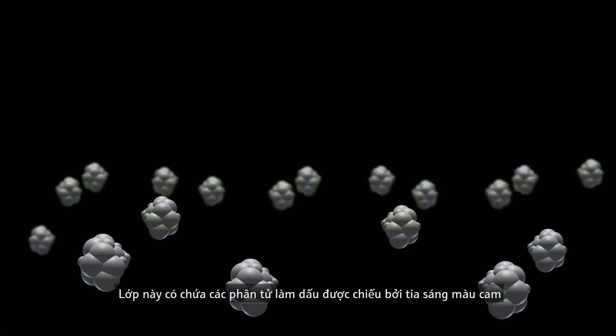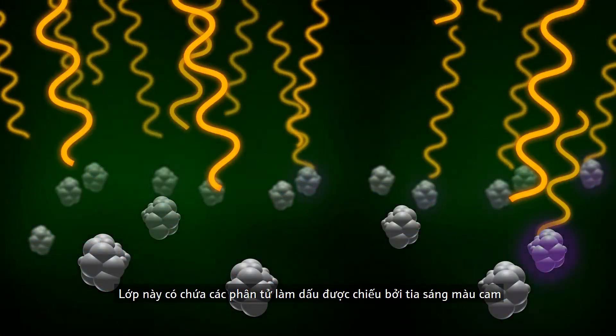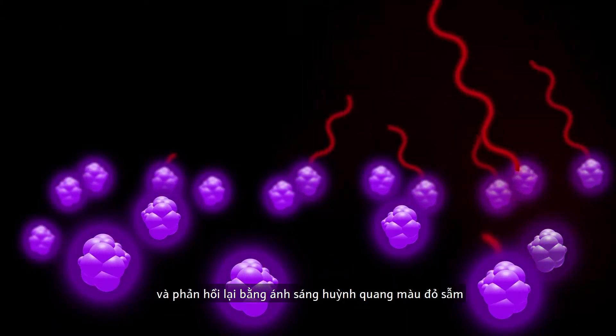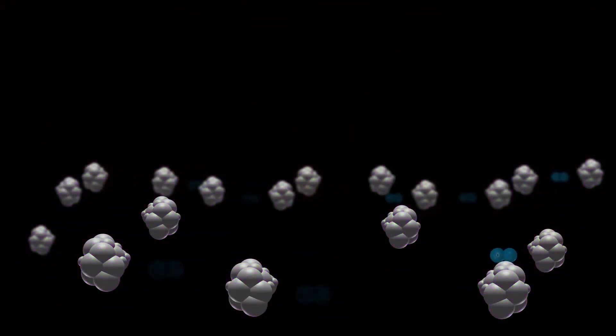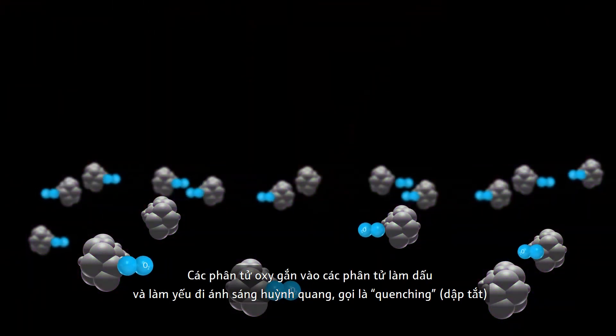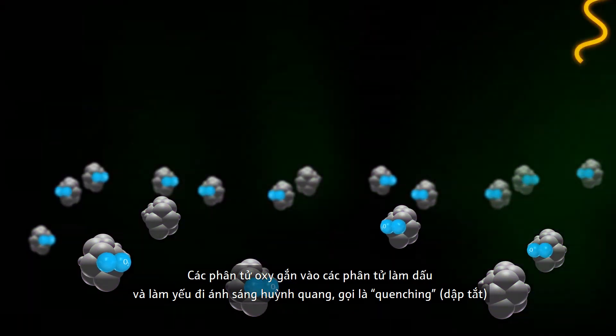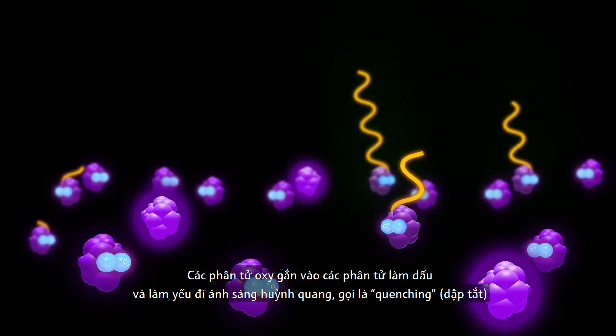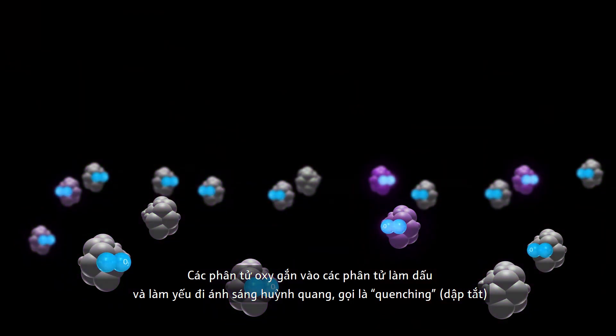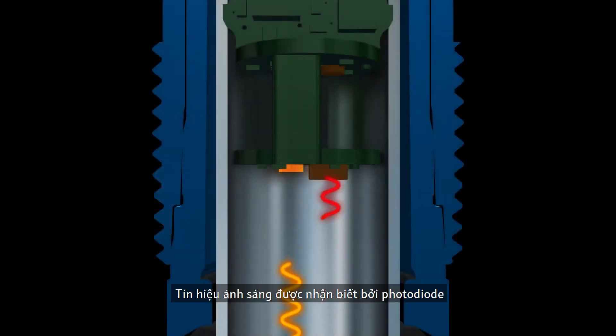The layer contains marker molecules that are excited by an orange light and respond with a dark red fluorescence light. Oxygen molecules attach to the marker molecules and attenuate the fluorescence light, which is called quenching. The light signal is detected by the photodiode, processed in the transmitter, and displayed in the required units.